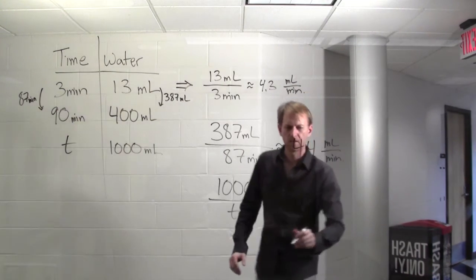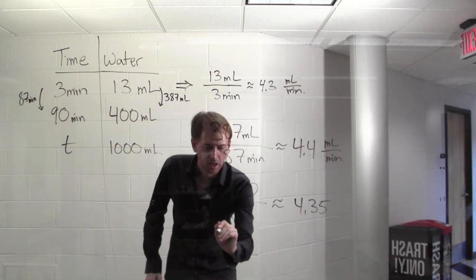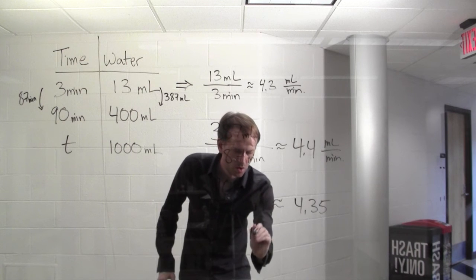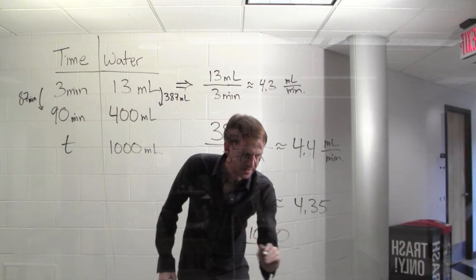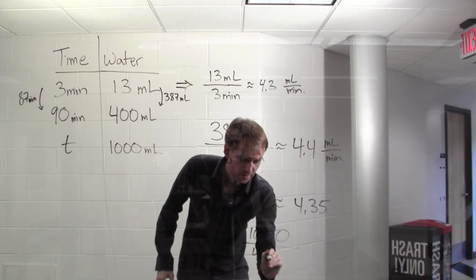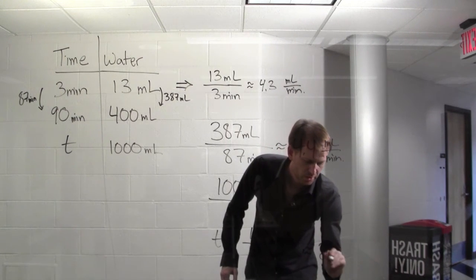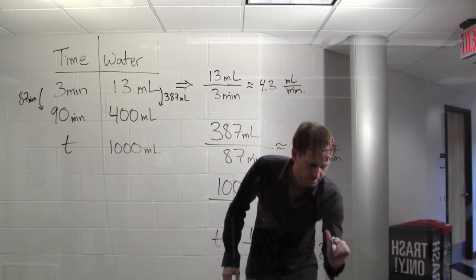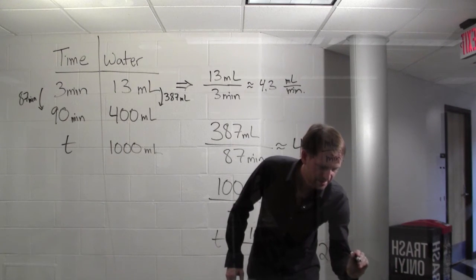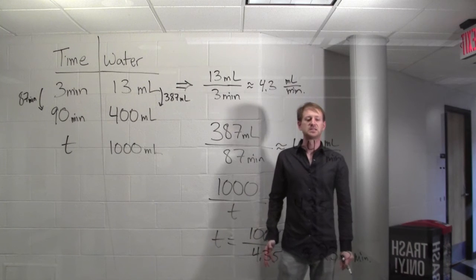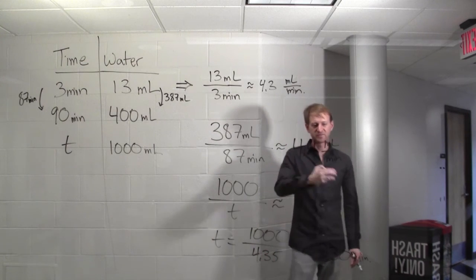Aha! So now, that's the same as saying T is equal to 1,000 divided by 4.35, and this is approximately 230 minutes. 230 minutes is 3 hours and 50 minutes.